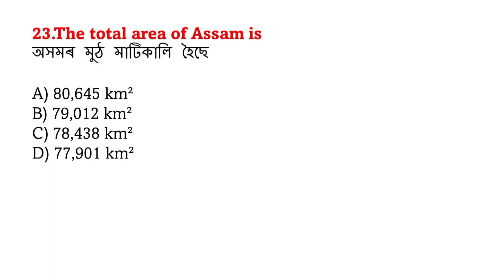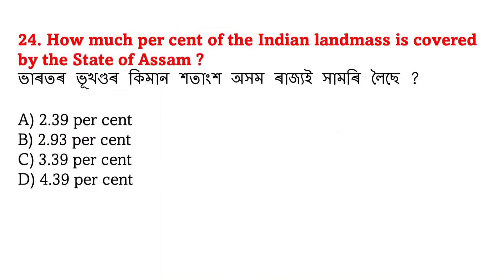The total area of Assam is 38,000 square kilometers approximately. How much percent of the Indian landmass is covered by the state of Assam? The answer is 2.39% of the total Indian landmass.